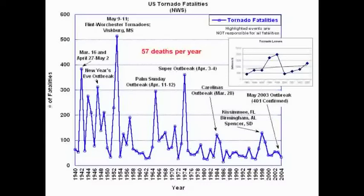Since 1880, there have been 19,000 deaths in the United States from tornadoes. The deadliest decade was the 1950s, with an average of 140 deaths per year. Starting around the late 1970s and early 1980s, there aren't as many events producing 300, 400, or 500 fatalities. This is not because there have been fewer tornadoes — it's a product of more advanced warning systems, better education, heavy research, and the invention of our Doppler radar network.